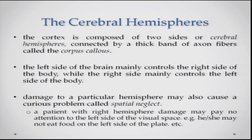The cerebral cortex has two sides — the cerebral hemispheres — connected by a thick band of fibers called the corpus callosum. The left side of the brain mainly controls the right side of the body, while the right side of the brain mainly controls the left side of the body. This is one of the basic principles of organization in the human brain.